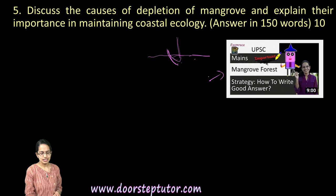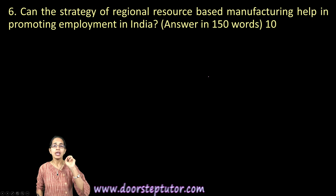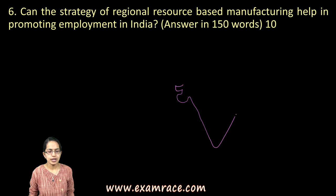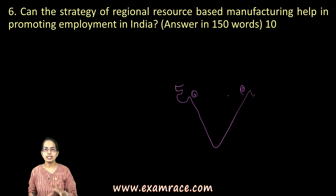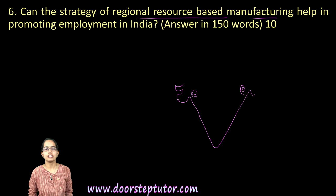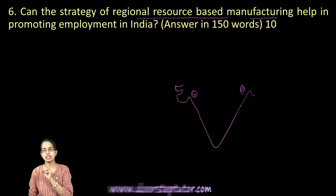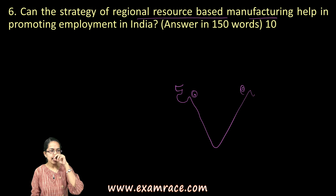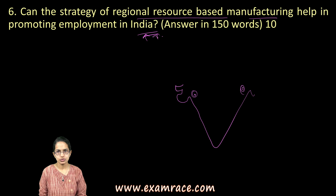The next topic is the strategy of regional resource-based manufacturing. Be careful about what the question is asking — it is about developing regional centers. For example, textile centers where there is cotton production, or jute industries where there is jute production. There are numerous government employment strategies featured in Yojana and Kurukshetra magazines that can support your answer.